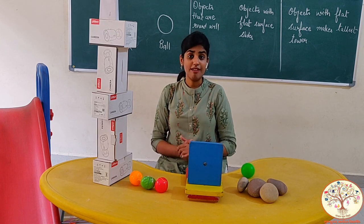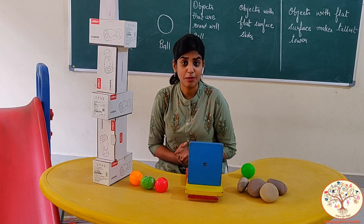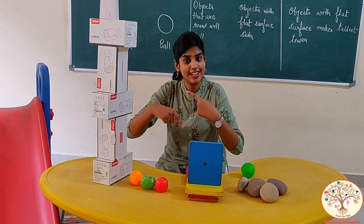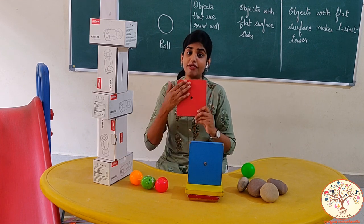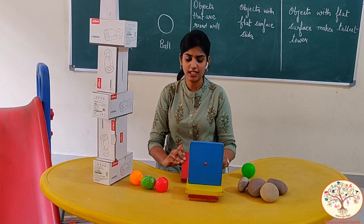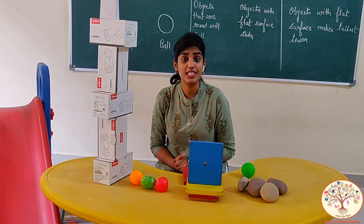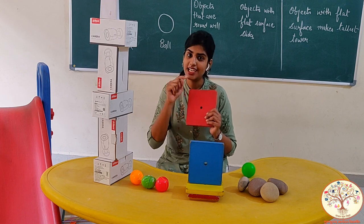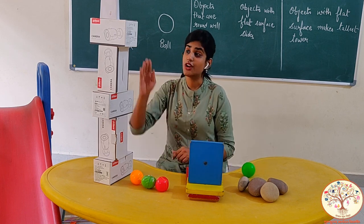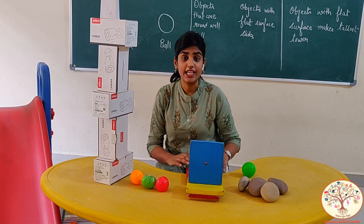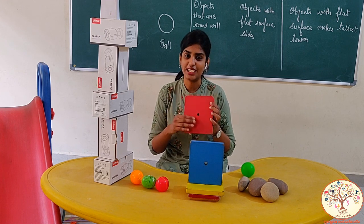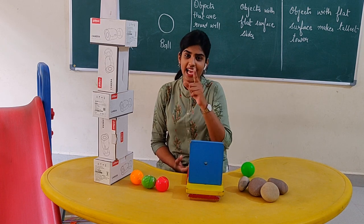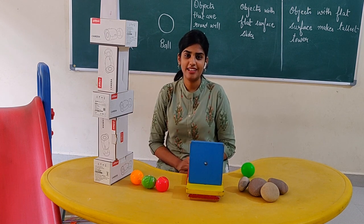Students, today we have learned three things: what are round objects and what are long objects; objects that are round will roll, and objects that have flat surface will slide; some objects can both slide and roll because they have flat surface and round surface. And the tallest stack can be made with flat surface objects. Don't forget to like, subscribe and share our channel, and stay tuned for the next video. Bye-bye!